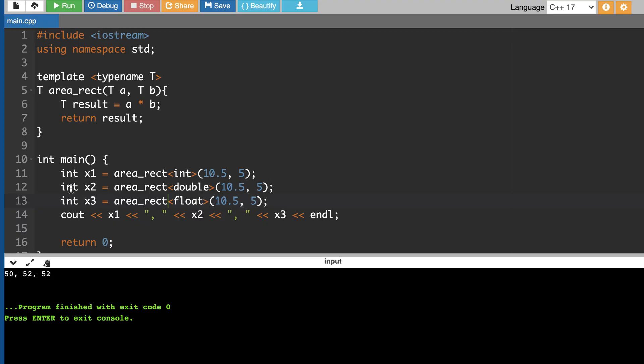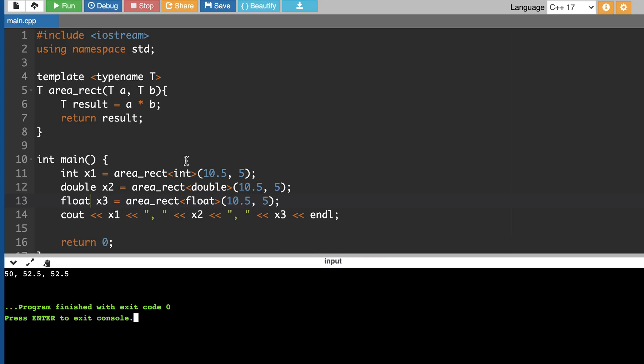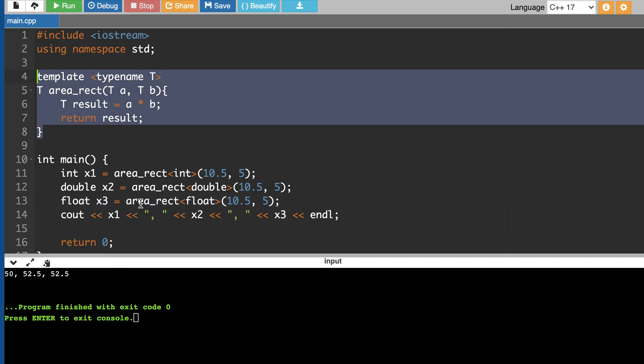Here it was int so that's why it was converted from 52.5 to 52. But let's call it double and float. Now it should be in double and float.